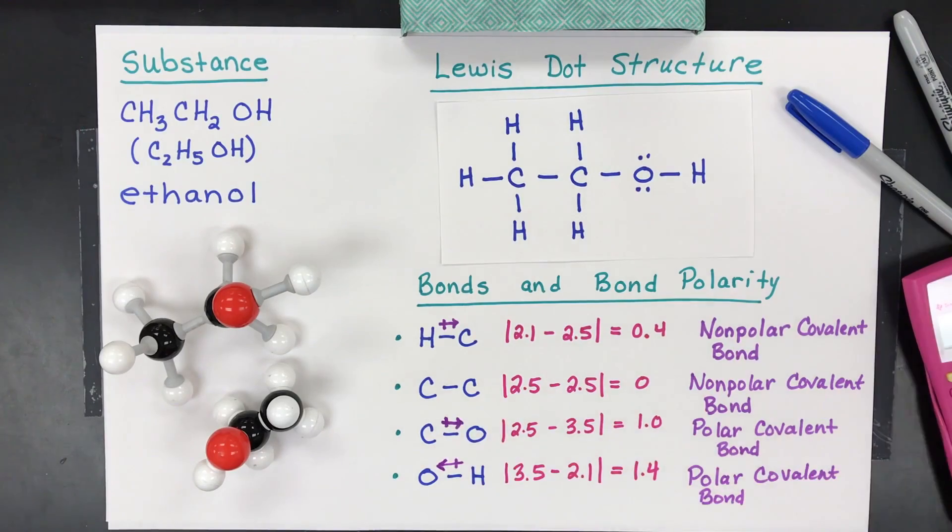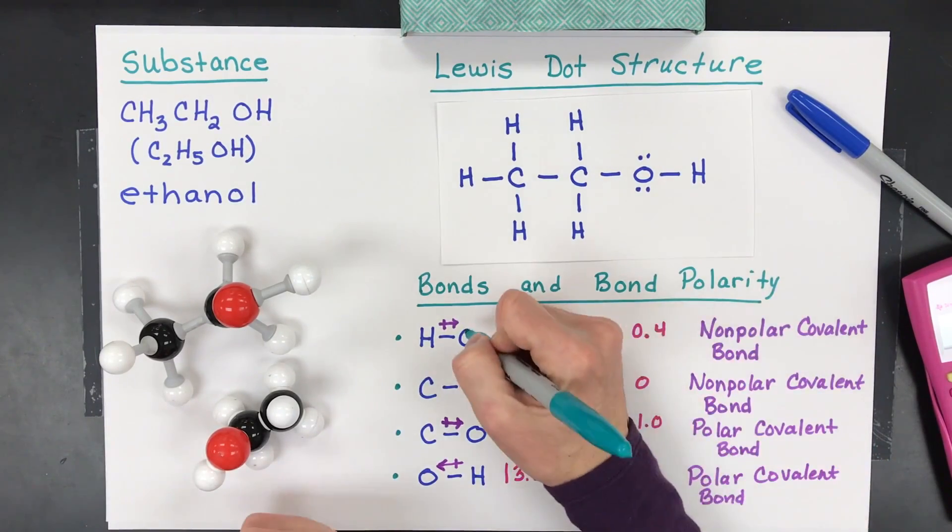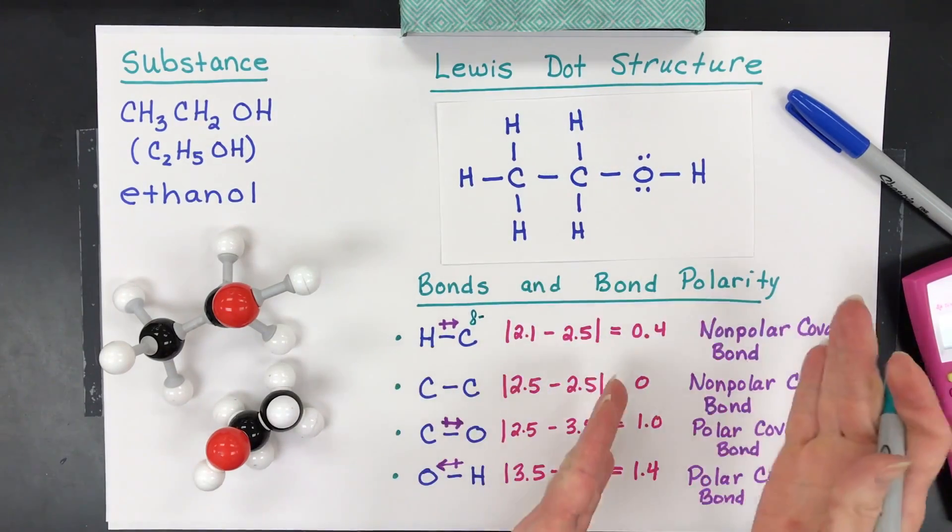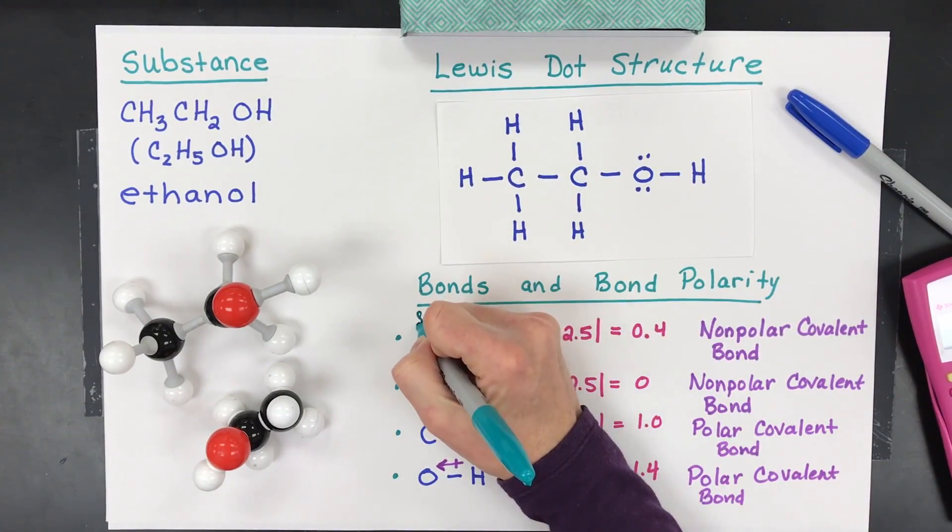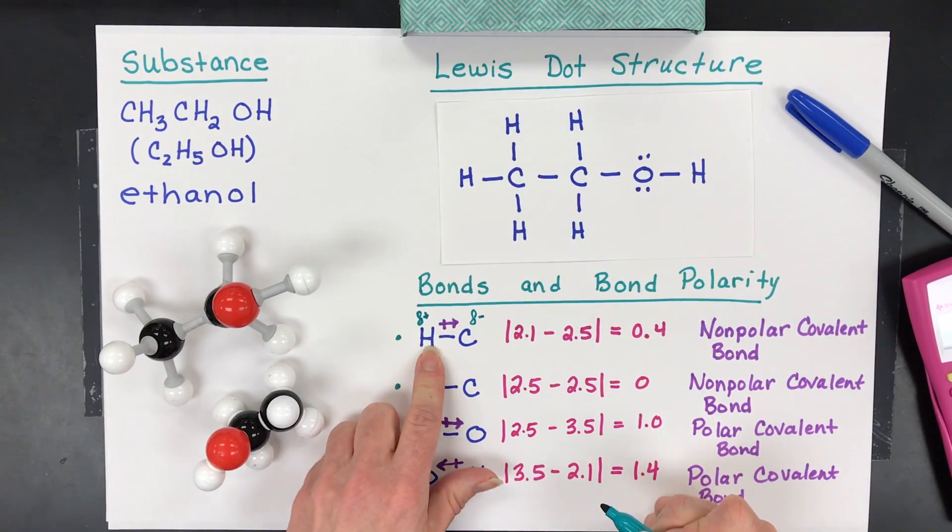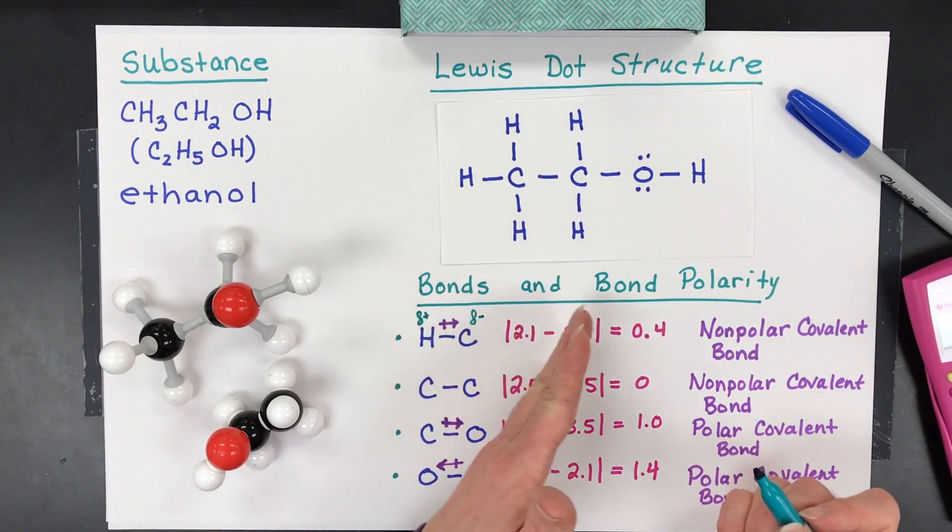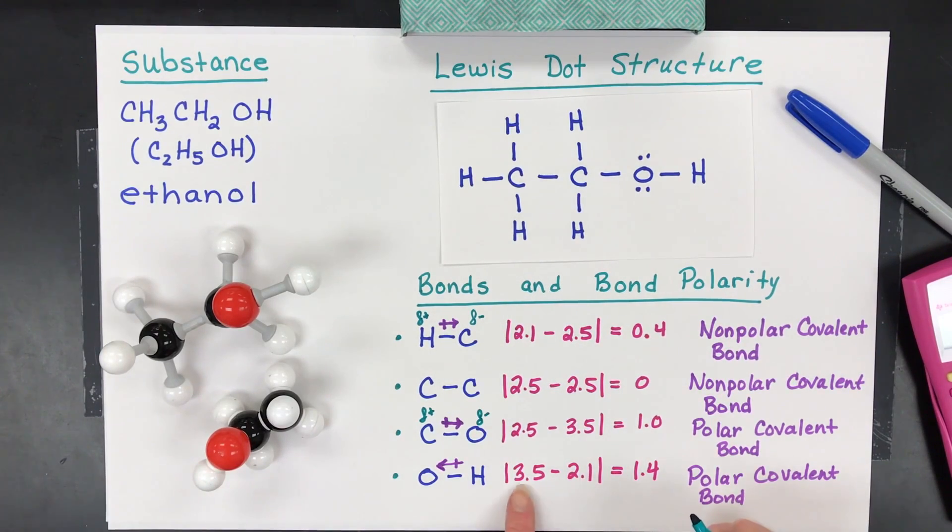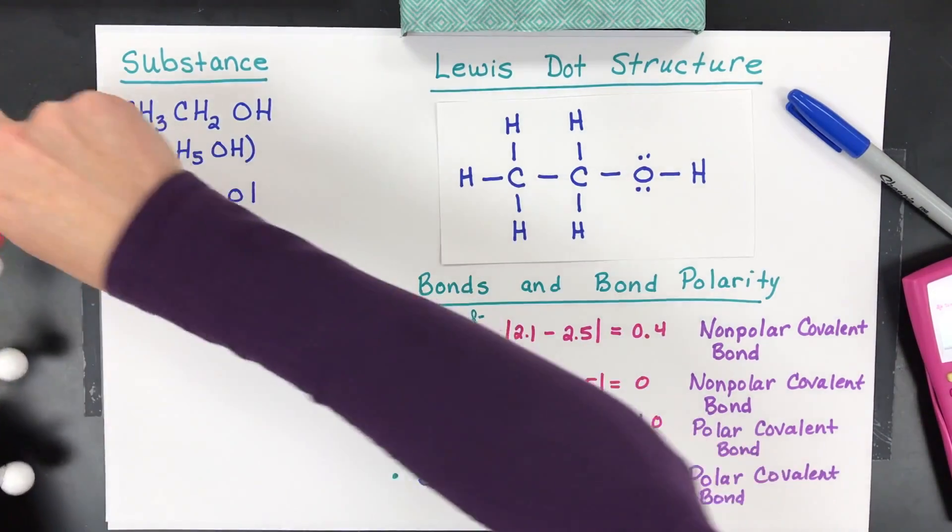The other thing they might have you do is they might have you list what's called a partial positive, partial negative end. Super simple. It's a delta symbol. Looks like that. And they'll say carbon is a little bit negative because the electrons are being pulled towards it. Remember the definition of electronegativity. And so this one's a little positive because it's got the electrons going that way. This one, you wouldn't have any. This one, oxygen would be negative. Carbon would be positive. And then, be careful, oxygen here would be negative. And hydrogen would be positive. So it's called a delta. It just means sort of or partially.